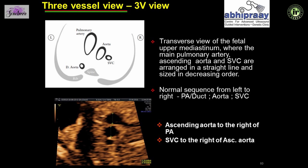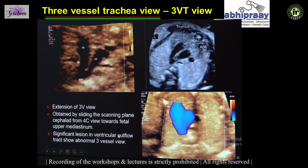The three vessel view is one cephalad section above the four chamber view, where you see the pulmonary artery, the aorta, and the SVC in line from left to right in descending order of size — the pulmonary artery is slightly larger than the aorta, which is slightly larger than the SVC. One section above that, the aorta and pulmonary artery join the descending aorta in the form of a V to the left of the spine. The PA connects to the aorta via the ductus arteriosus, and the part of the aorta beyond the origin of the subclavian artery is called the isthmus.